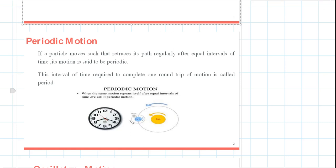This period is 60 minutes. If you look at it, it will complete a full rotation. This is a periodic motion. For example, the Earth's rotation around the Sun, the Moon's rotation around the Earth, and the self-rotation of Earth — these are all periodic motions, each with a different period.